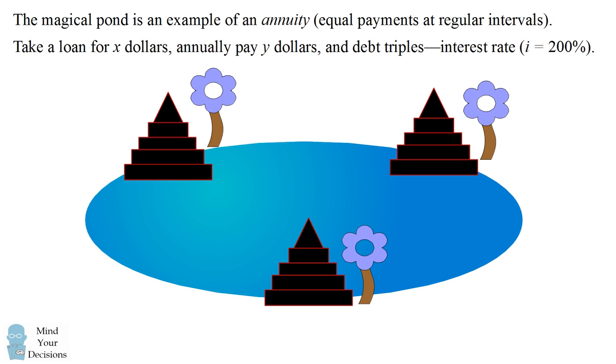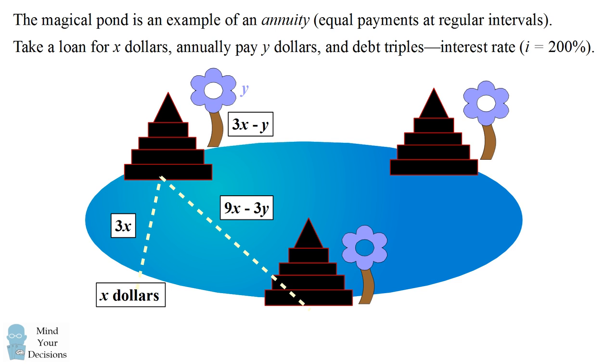Imagine we take a loan out for x dollars, every year we pay off y dollars of the loan, but each year the amount of debt that we have remaining triples. We have an interest rate of 200%. If we had this kind of problem, and each temple we imagine visiting one temple in a year, this would exactly lead us to the same algebraic problem of paying off a debt in three years, in which we have an equal payment of y every year, and the outstanding debt triples.